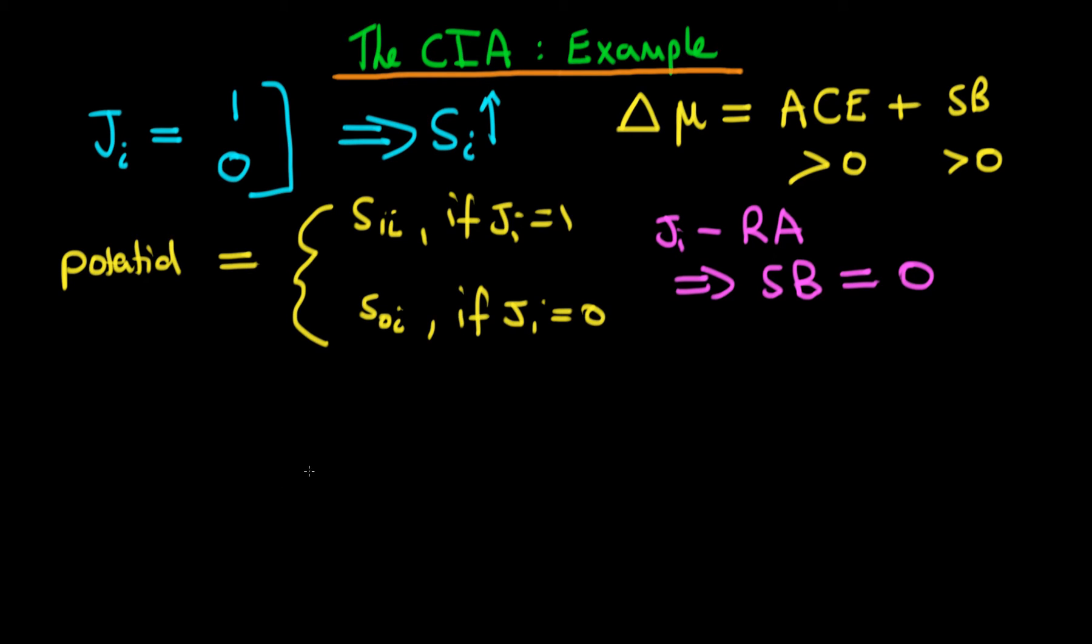In this video, I want to talk about how we can proceed in the circumstances when we cannot assume that Ji is randomly assigned. But what we can assume is that S1i and S0i are conditionally independent of Ji, perhaps conditioned on an individual's past level of performance. So I'm going to write that as PP. So conditional on past performance, we can assume that S1i and S0i are independent of Ji. But what does this actually mean?